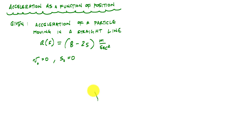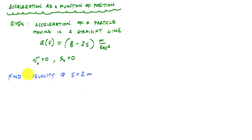One of the questions might be: find the velocity at some position — in this case, what's the velocity at s equals 2 meters? And another question might be: what is the position when we reach maximum velocity?